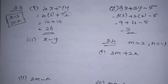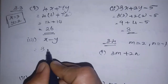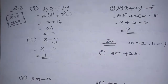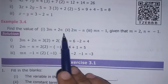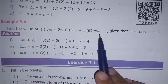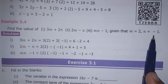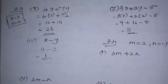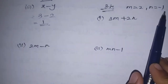Clear? Next is the third subdivision: x minus y. Next example: find the value of 3m plus 2n, 2m minus n, and mn minus 1, given that m is equal to 2 and n is equal to minus 1.